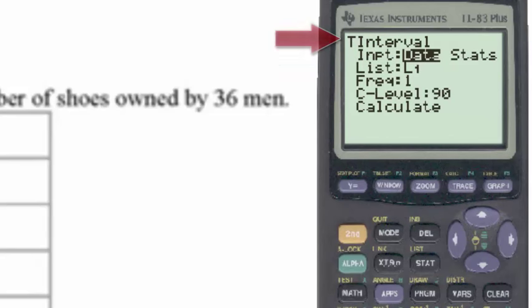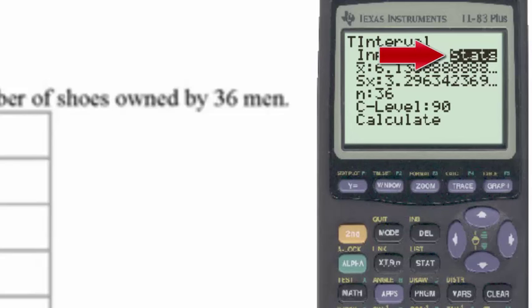We'll select number 8, and under the t interval, we see that the input can be either in the form of a data list, or we could have the input in form of summary statistics.